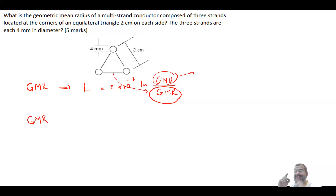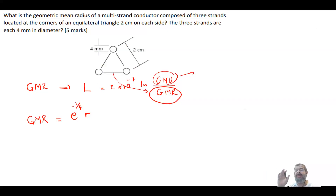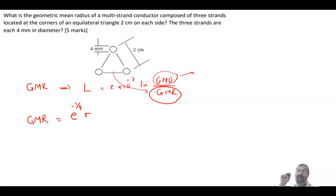For a single conductor, GMR equals e^(−1/4) times the radius. This formula arises because there is a fundamental difference between the electric field and the magnetic field. When calculating GMR for capacitance, it is simply r, but for inductance it is e^(−1/4)·r, because the electric field cannot penetrate the conductor so the field inside is zero, while the magnetic field can penetrate the conductor.